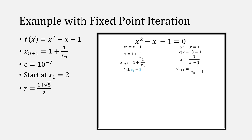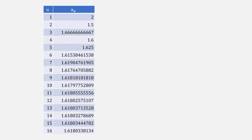Let's look at an example using fixed point iteration to create our sequence of numbers. If you're not familiar with fixed point iteration, I suggest watching my video on this topic. Fixed point iteration gives us this sequence of numbers, and if we subtract the root from each x, we can compute the error.